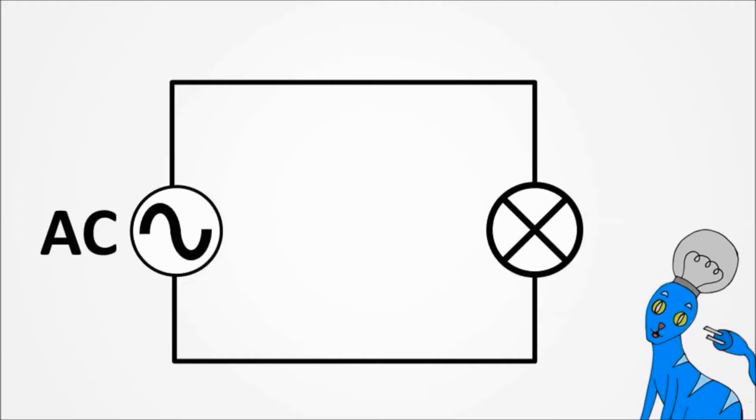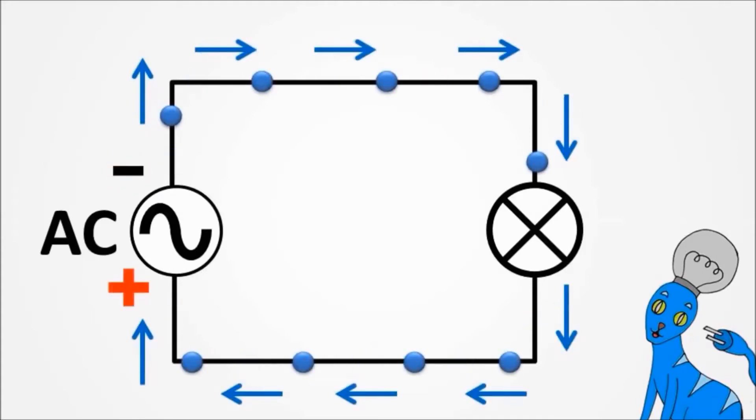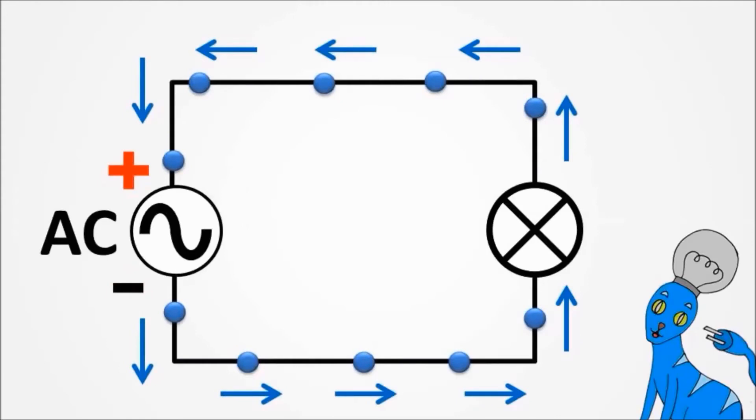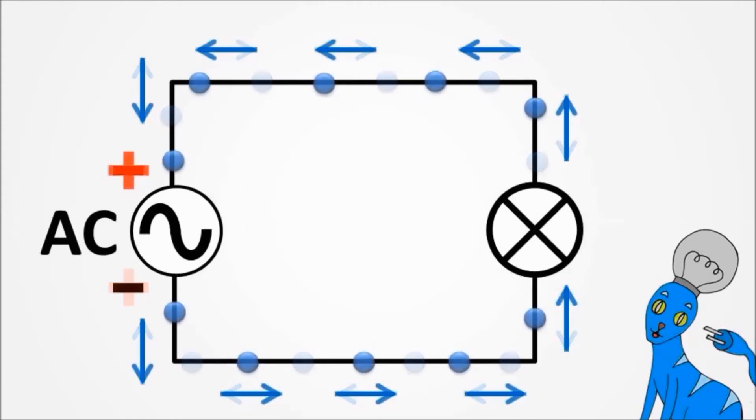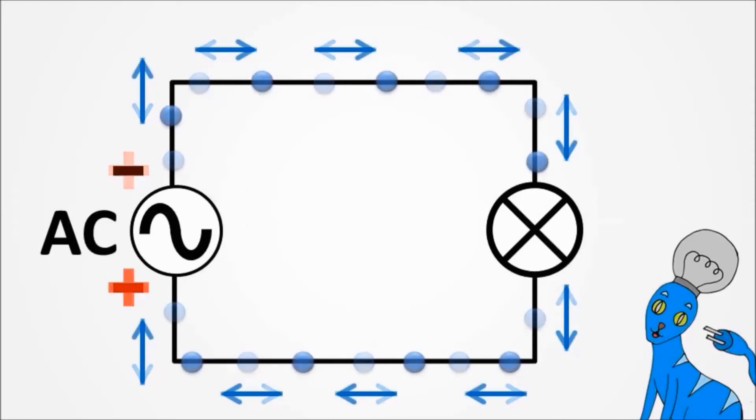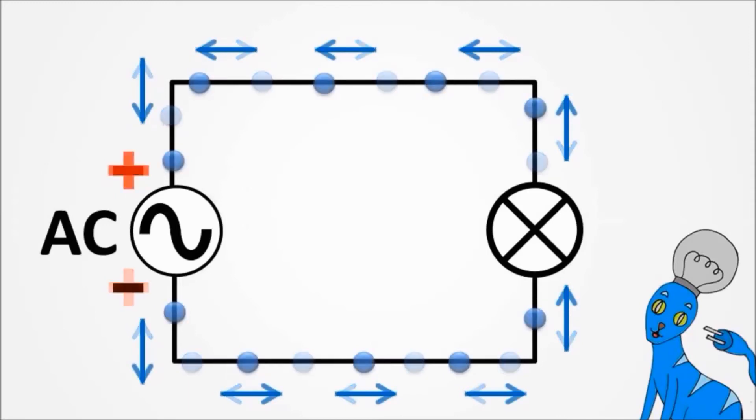As the name says, alternating current. The ends of an AC power supply alternates between negative and positive. In other words, negative and positive terminals are not fixed. They are constantly alternating over and over again.